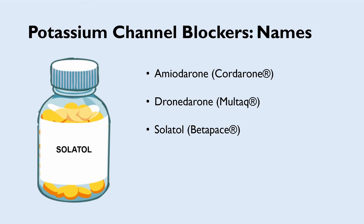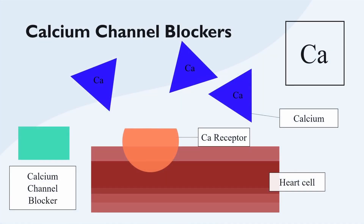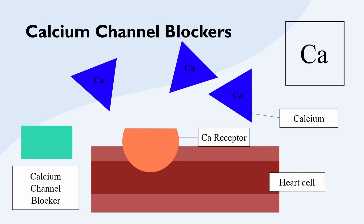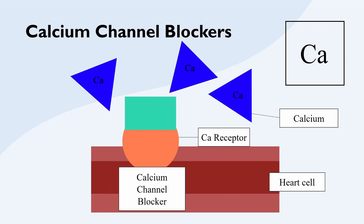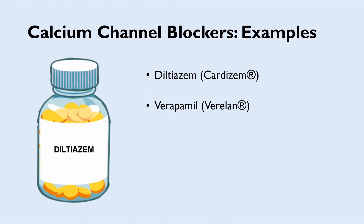Similar to beta blockers, calcium channel blockers will also slow the conduction of electrical impulses at the SA and AV nodes, which will in turn decrease the heart rate. They do this by blocking the movement of calcium into the heart cells, slowing the rate of contraction of the heart muscle and prolonging the time between each contraction. Some examples of calcium channel blockers include diltiazem and verapamil.